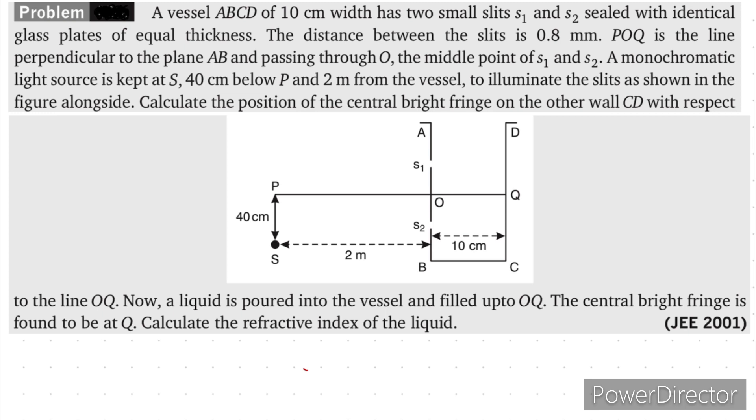Now let us see what is the question. A vessel ABCD of 10 cm width has two small slits S1 and S2. So these are two small slits S1 and S2 sealed with identical glass plates of equal thickness. The distance between the slits is 0.8 mm. So what is given? Let us see what is given.